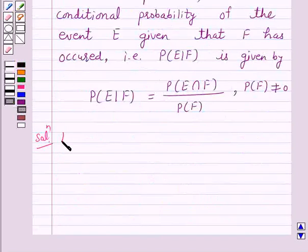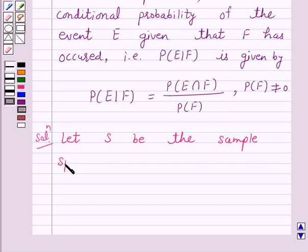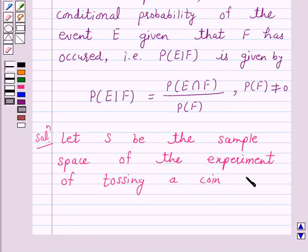Let S be the sample space of the experiment of tossing a coin three times. Therefore,